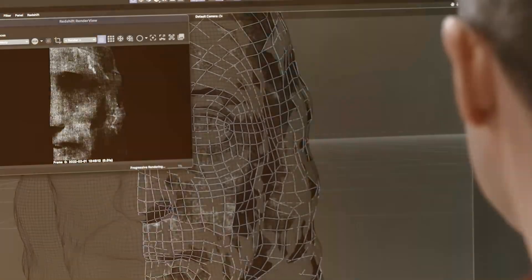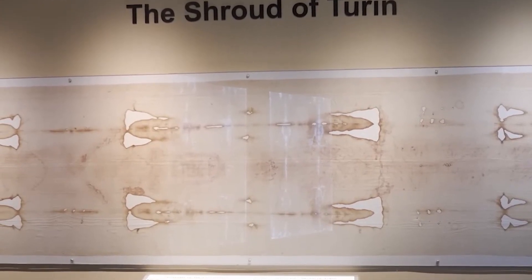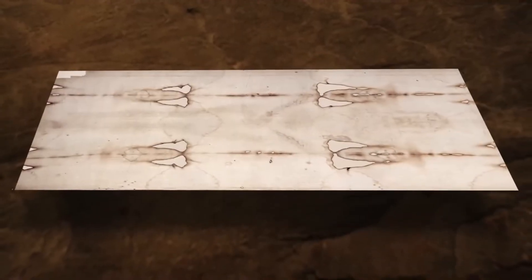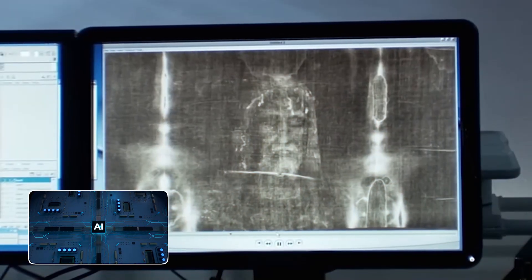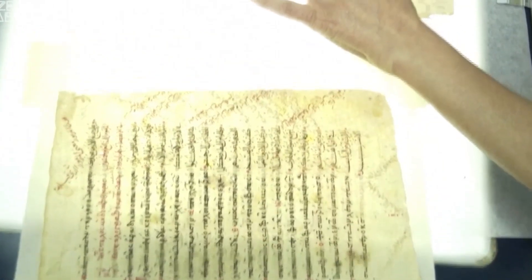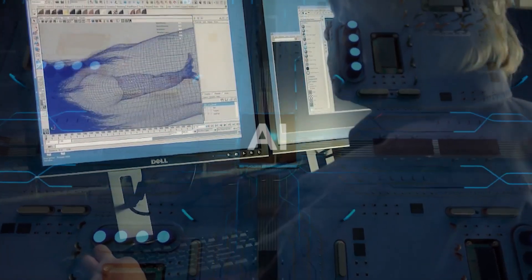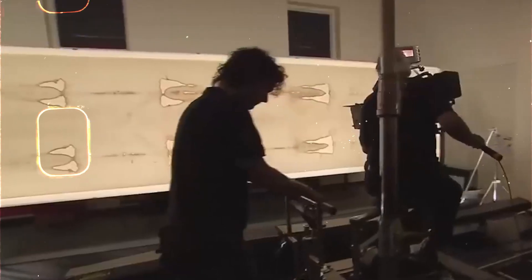This is where the story gets really strange. The AI didn't just find abstract math. It started finding other information patterns, things that were always considered fringe theories but are now being verified by the machine. For decades, researchers have claimed to find faint writing on the shroud, ghostly letters near the face. These were always dismissed as random marks in the linen weave. The AI was tasked to look again. The result? The AI confirmed the presence of lettering, not random marks. It found faint, particle-level traces of text in ancient Greek and Aramaic. Because these letters share the exact same chemical and mathematical properties as the main image, the AI concluded they were formed at the same time and by the same energy event. They are part of the original imprint.